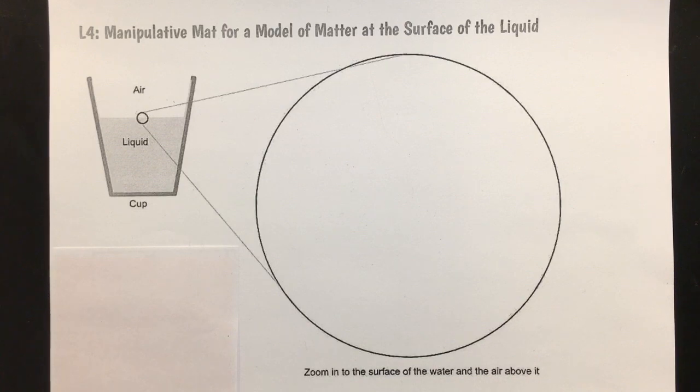It seems valuable to develop a model of the process of matter moving from a solid to a gas. We need to explain why the mass of the system decreases and why the level of the water drops over time. So let's establish a way to think about some really small pieces of water that are really too small for our eyes to see.